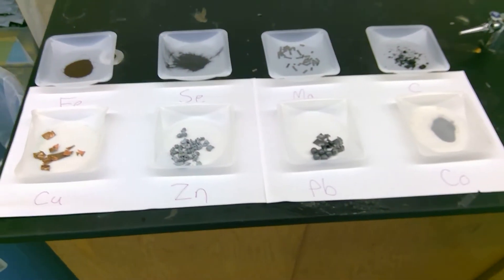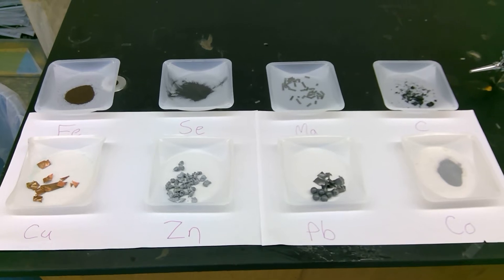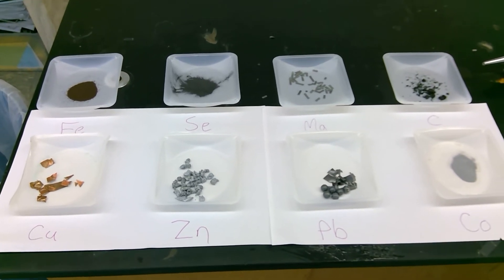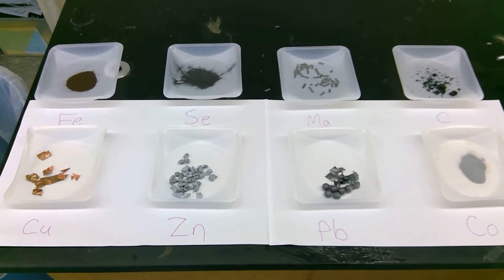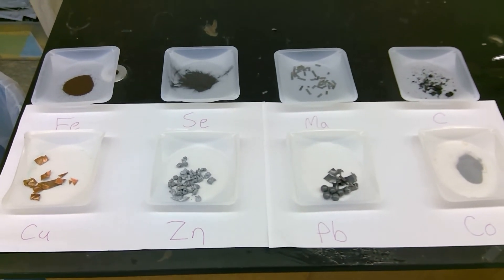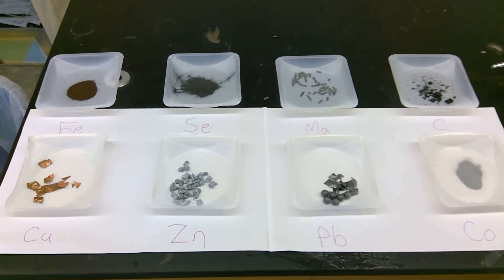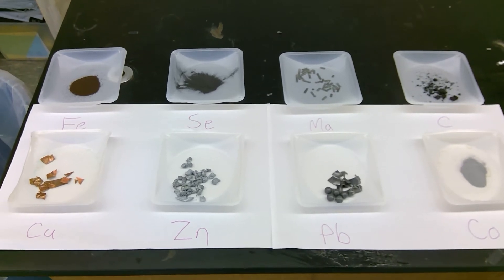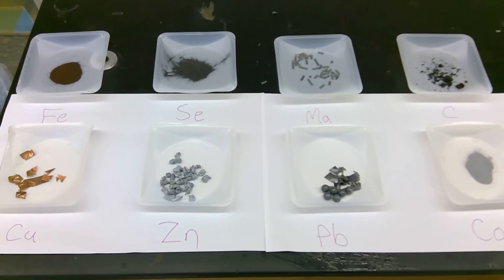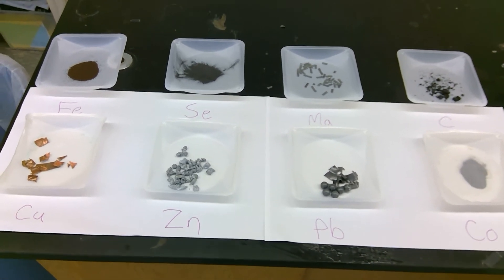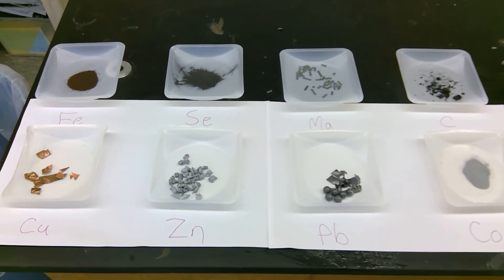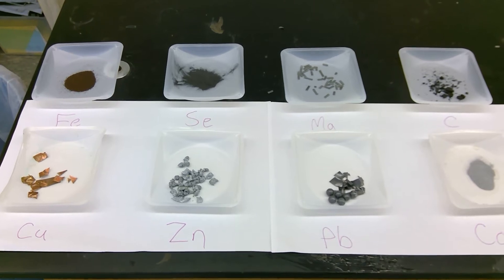You can pick whichever four you want. Hopefully we'll get some variety between groups, and we can wind up pooling our data results together and really come up with a pretty solid data set that definitely illustrates periodic trends. This is, of course, up to your group. I have more than what is in this tray, but we're definitely going to want to use some small samples.